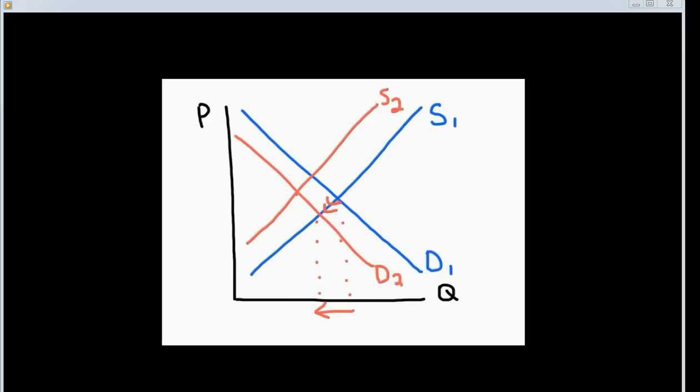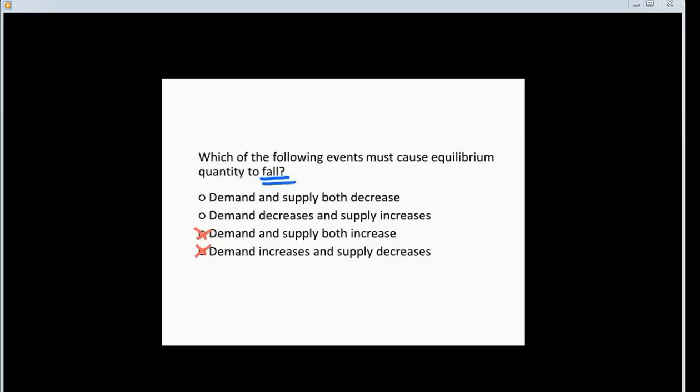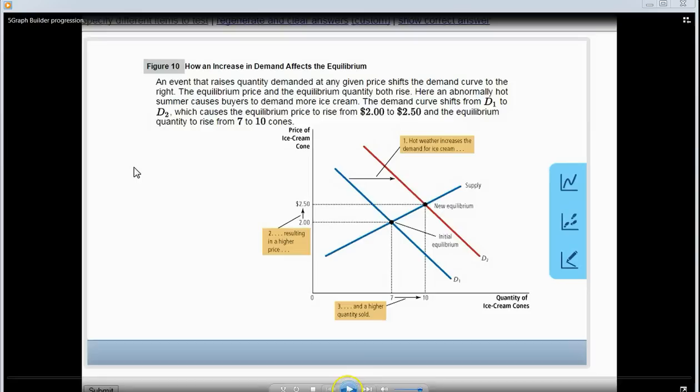In order to guarantee that the equilibrium quantity decreases with a simultaneous shift in supply, the supply curve must also shift to the left, causing an even further decrease in the equilibrium quantity. Therefore, which of the following events must cause equilibrium quantity to fall? Demand and supply both decrease.